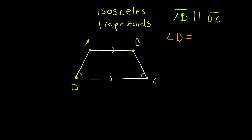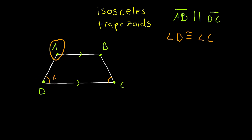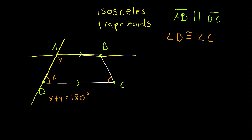In this isosceles trapezoid, the base angles C and D are congruent. The question is why must angles A and B also be congruent? It's because in a trapezoid, two angles that are not base angles — not adjacent to the same base — will always be supplementary. So if the measure of angle D is x and the measure of angle A is y, then x plus y must equal 180 degrees. Angles A and D are supplementary because side AD is a transversal cutting the parallel sides AB and DC, making them consecutive interior angles.